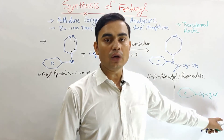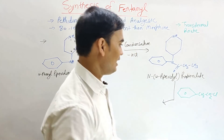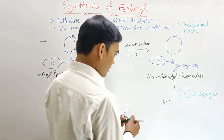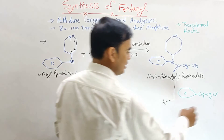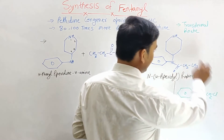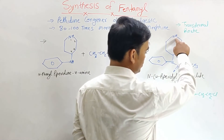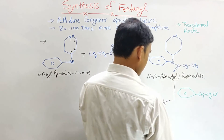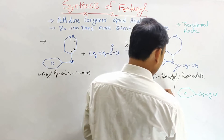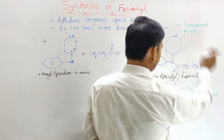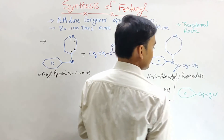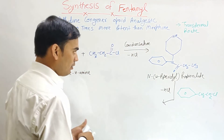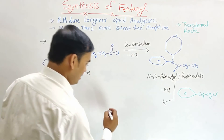N-4-piperidyl propionamide then reacts again with phenylethyl chloride under a condensation reaction. The chlorine takes the hydrogen and removes it as HCl, and the CH₂–CH₂–phenyl group joins onto the piperidine nitrogen.